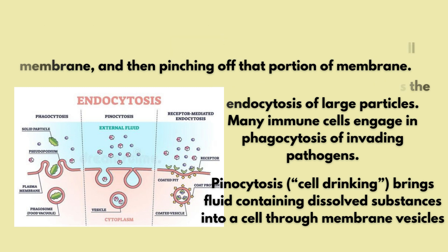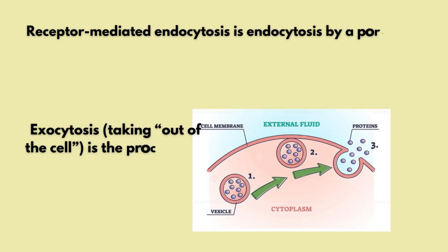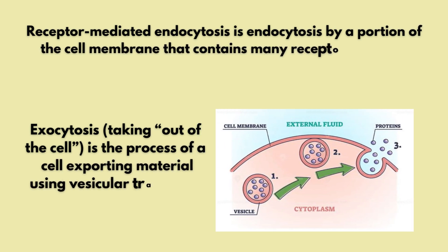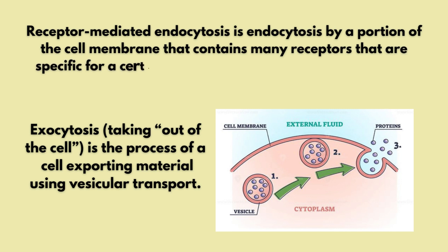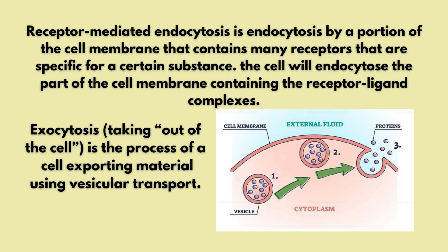The next type is receptor-mediated endocytosis. In this process, ligands attach to specific receptors on the cell surface, and the specific substances are taken into the cell in a coated vesicle form. The next process is exocytosis, which is the taking out of materials from the cell. In exocytosis, materials are exported from the cell in vesicle form; when the vesicle reaches the cell membrane, it fuses and releases its contents into the extracellular fluid.